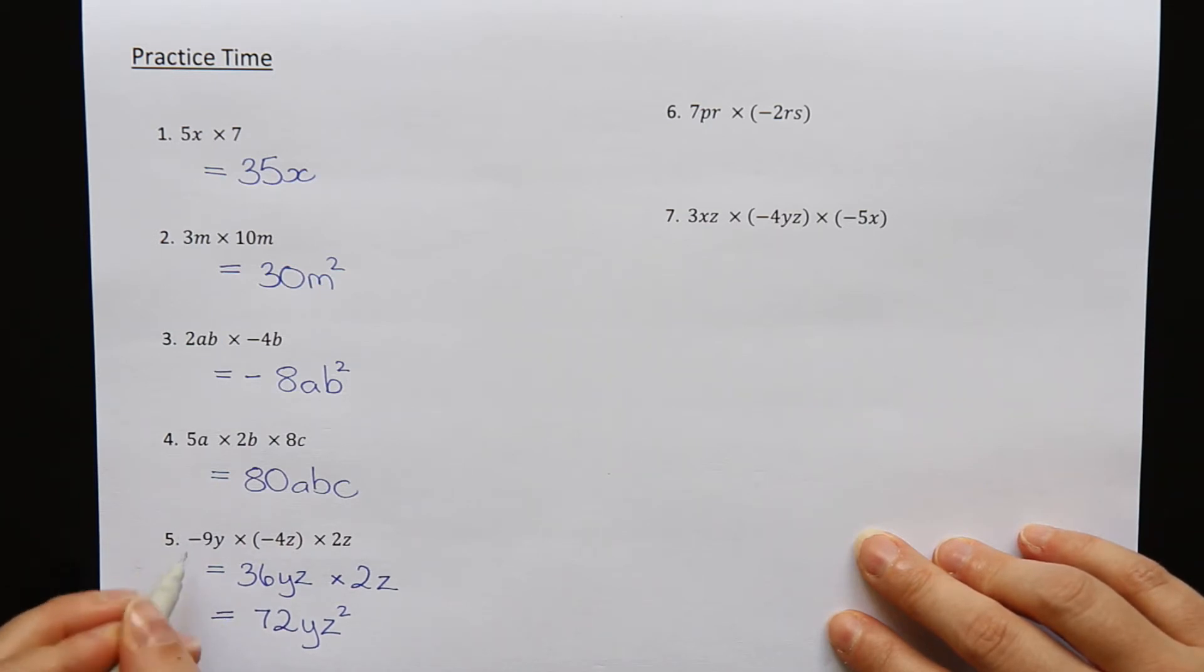You may be able to go straight from the first line to the answer depending on how good you are at multiplying numbers. If you're using a calculator, you'll definitely be able to multiply those numbers together and go straight to your answer.